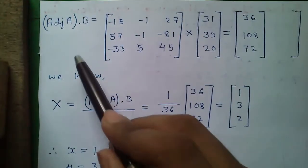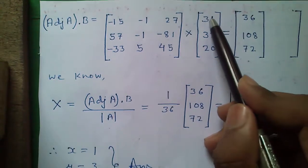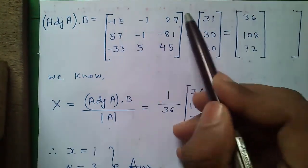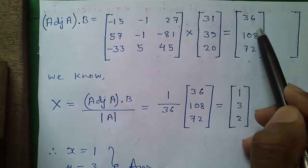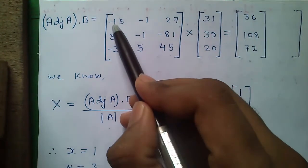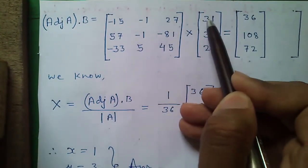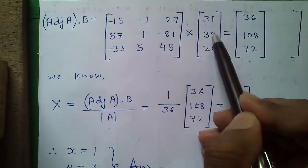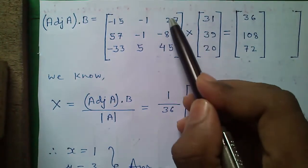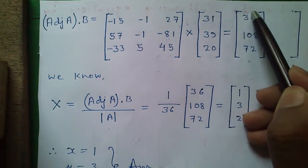Next we will find adjoint(A) × B. The matrix multiplication is computed row by row: each element of the result equals the sum of products of the corresponding row of the adjoint matrix with the column matrix B.